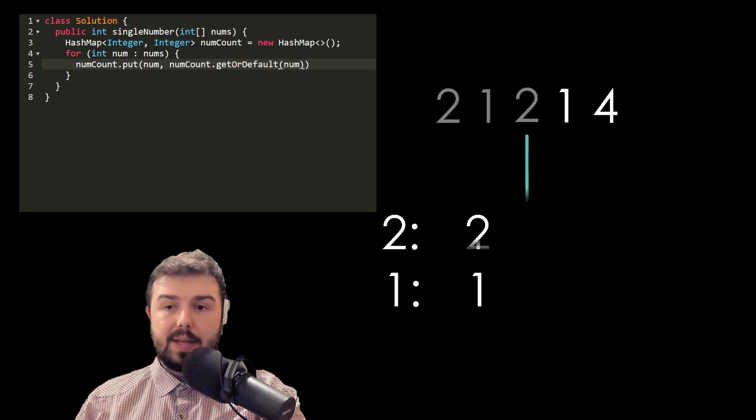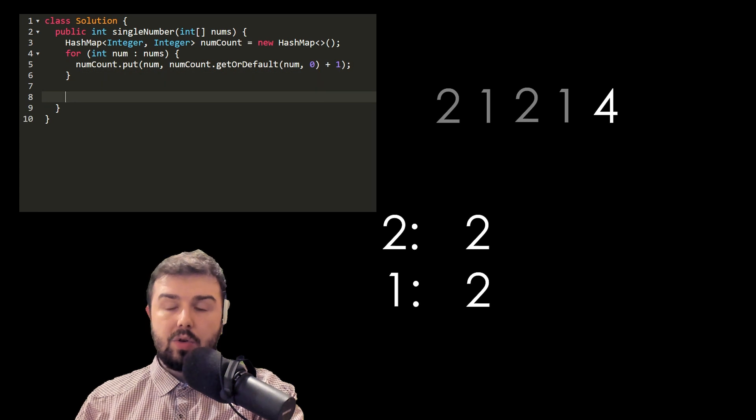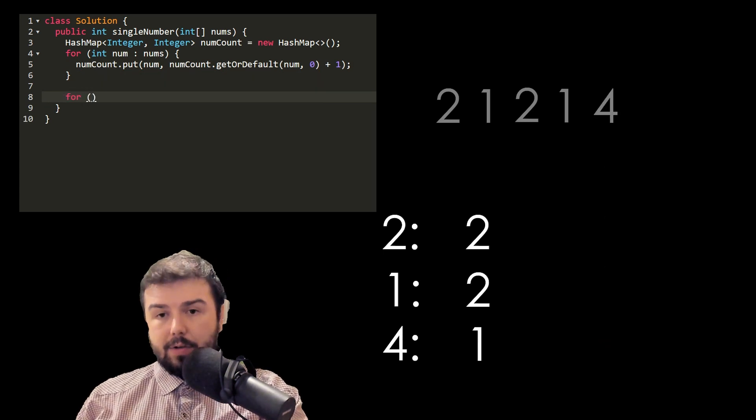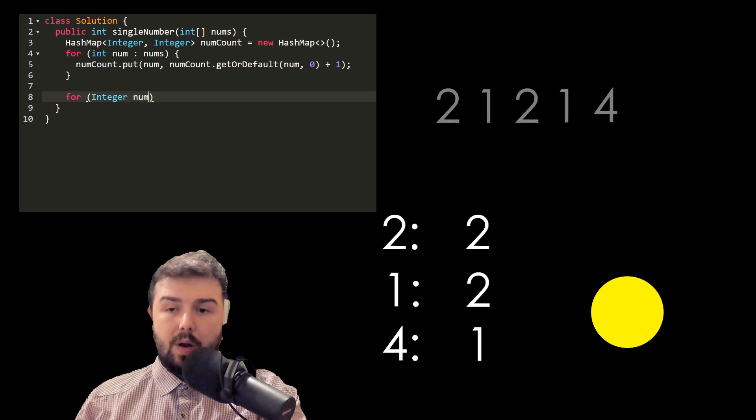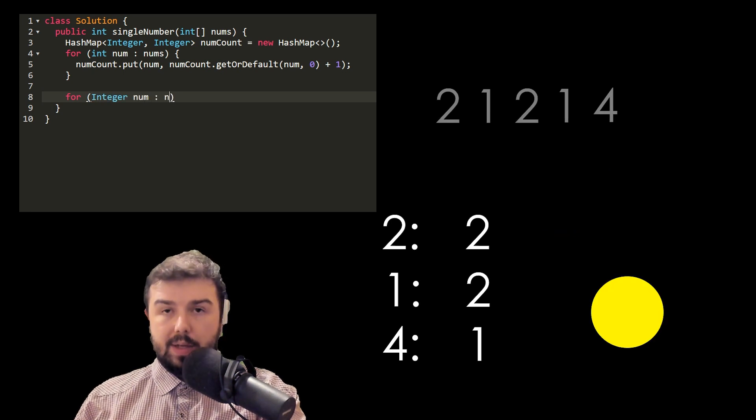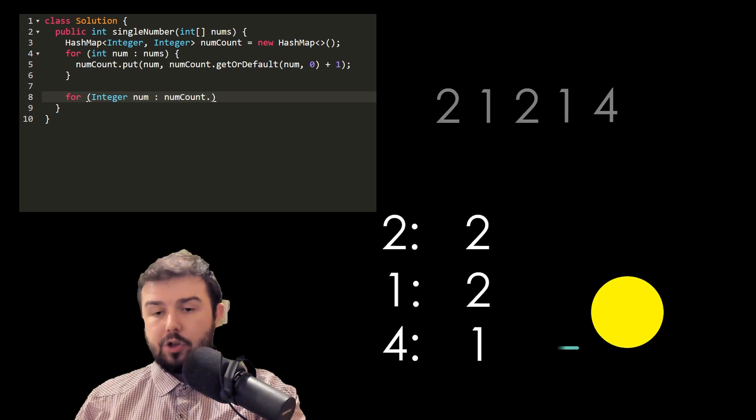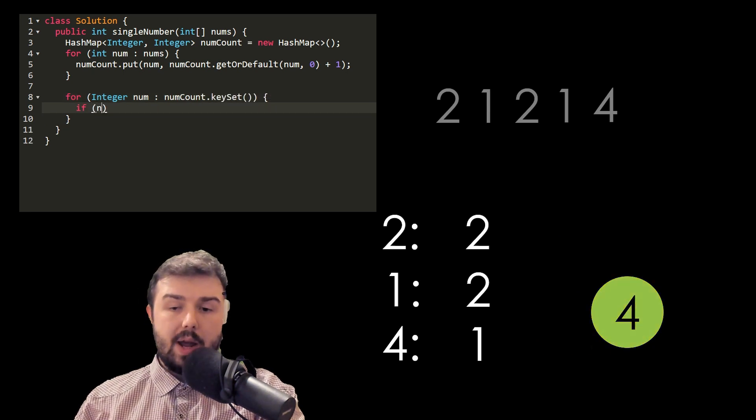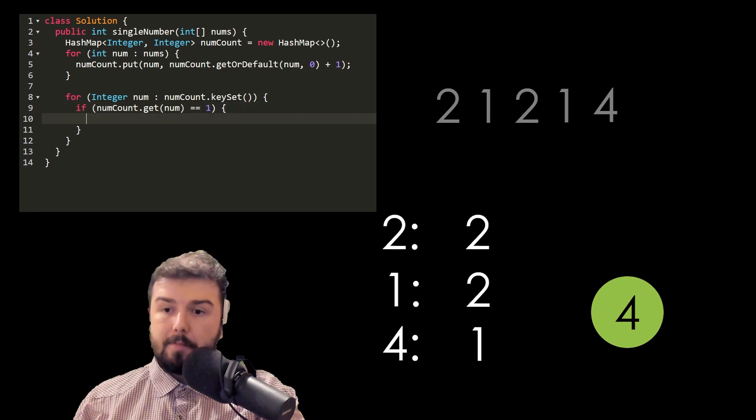We're creating the hash map and putting every number in this hash map and counting them. At this moment we have two number 2s, two number 1s, and one number 4. After this we can go through this hash map and check how many numbers we have. We have one number 4, that means that's the answer.